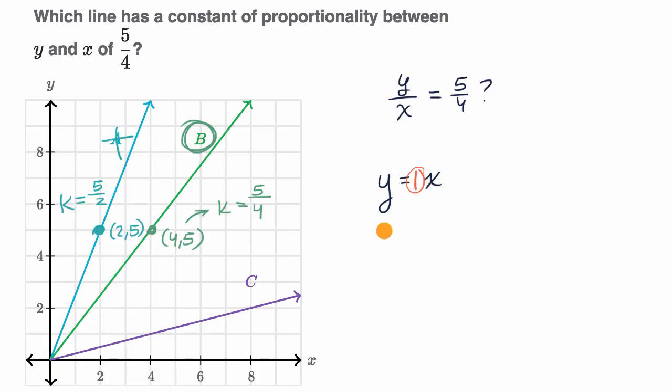Or if you took y divided by x, y over x, you divided both sides by x, you would be left with the constant of proportionality, which would be equal to one.